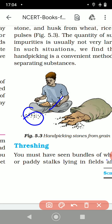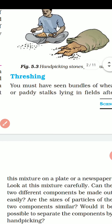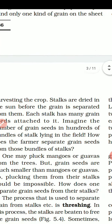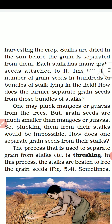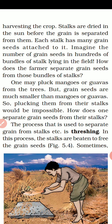Moving to the next separation method: threshing. You must have seen bundles of wheat or paddy stock lying in the field after harvesting the crops. Stocks are dried in the sun before the grain is separated from them. When harvesting, moisture remains in the plant, so they cut the stocks and keep them for sun drying. You will always find a heap of stocks kept together. When they get dried, each stock has many grain seeds attached to it.